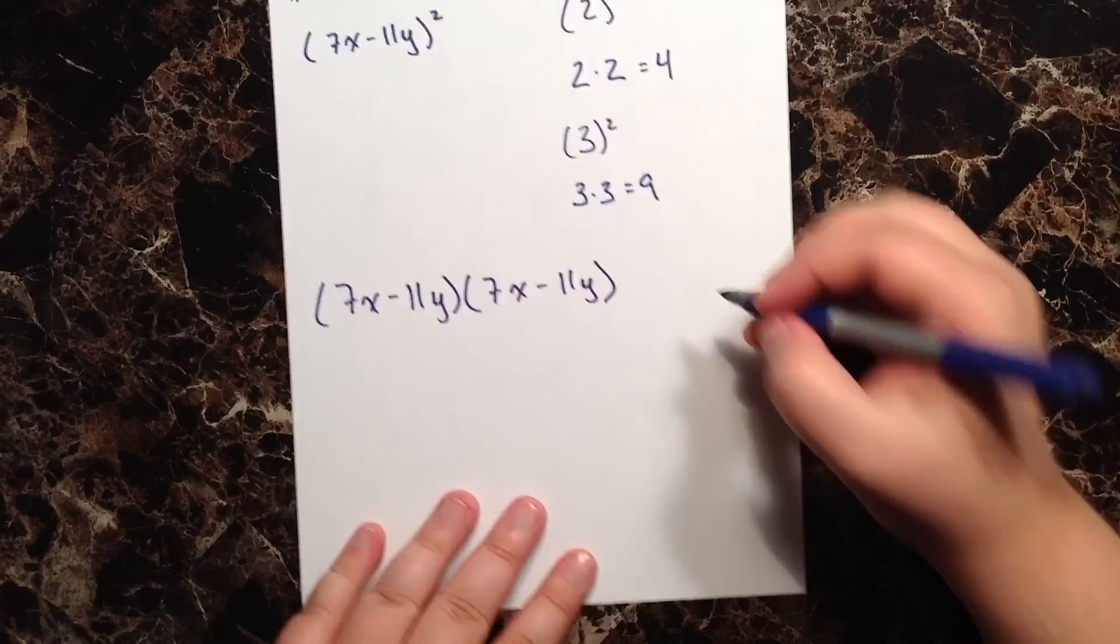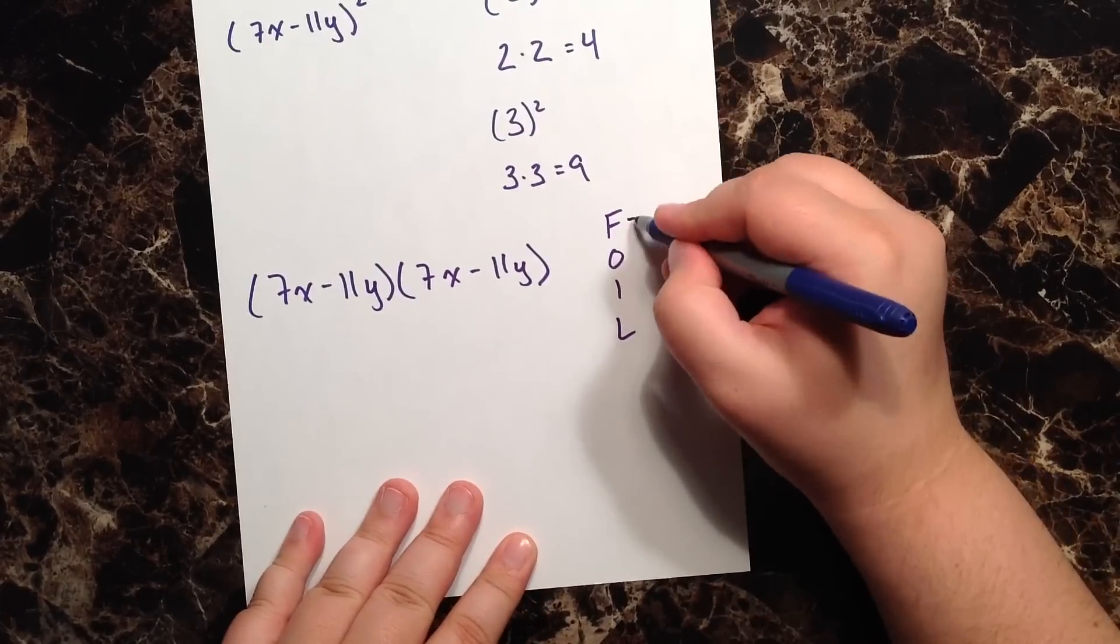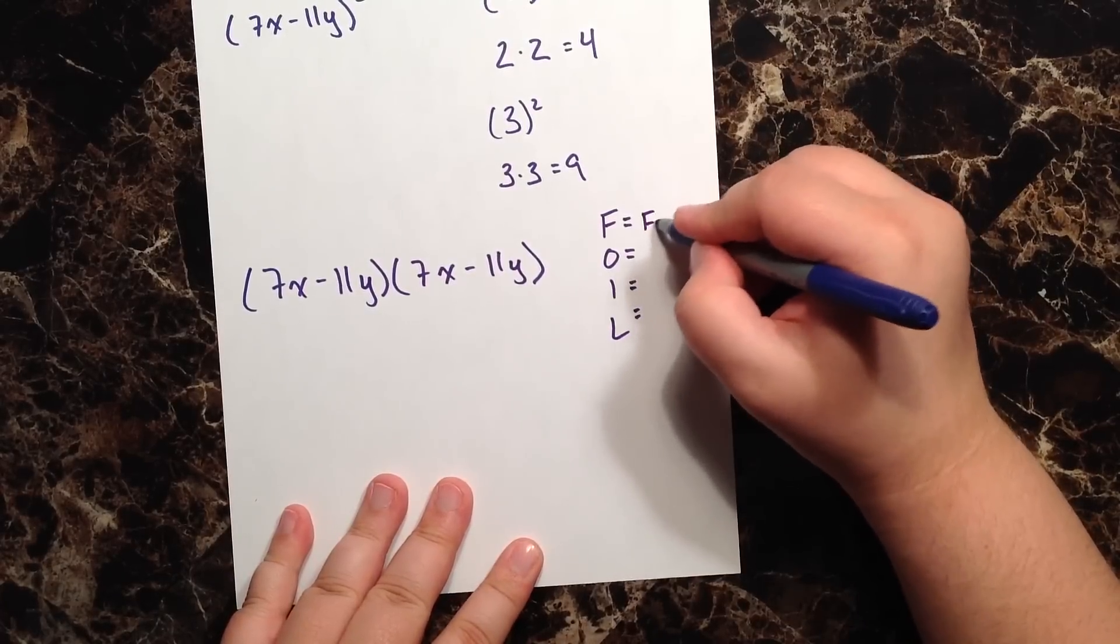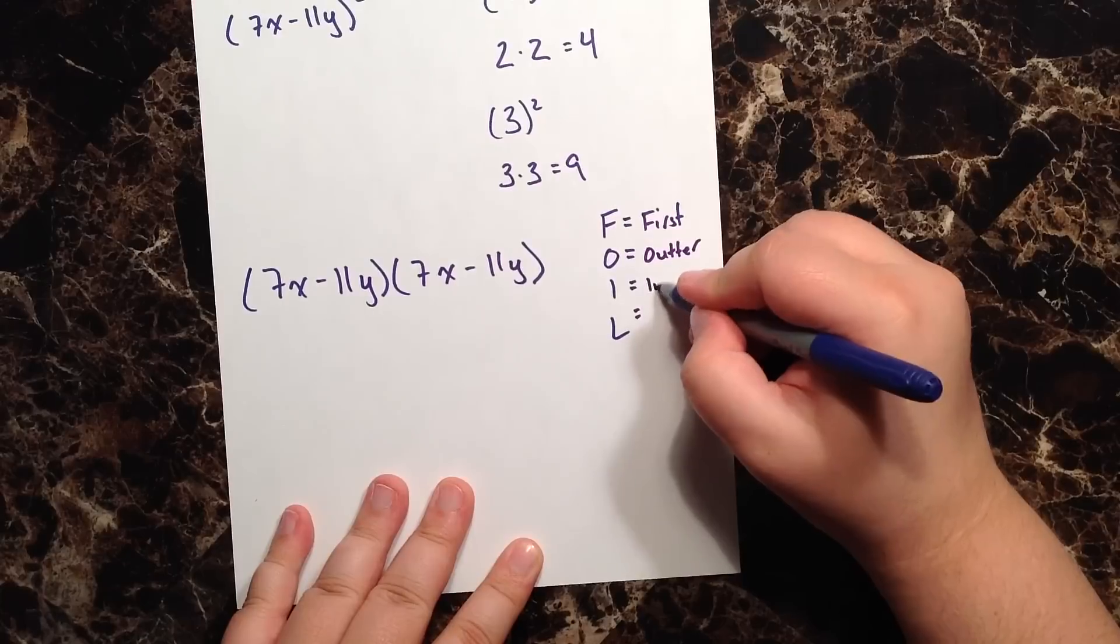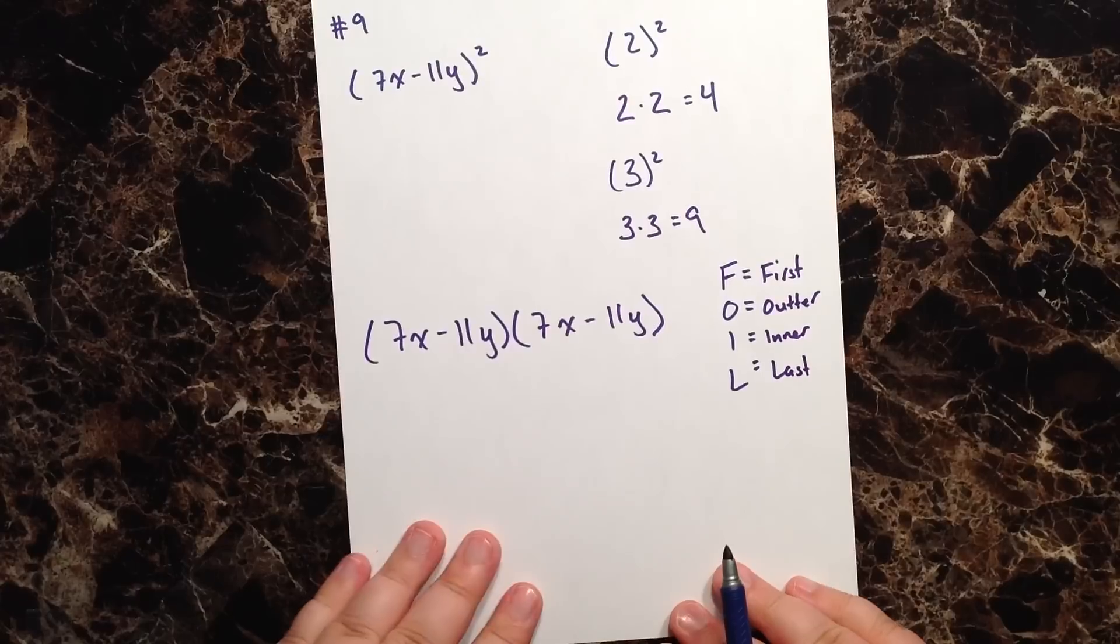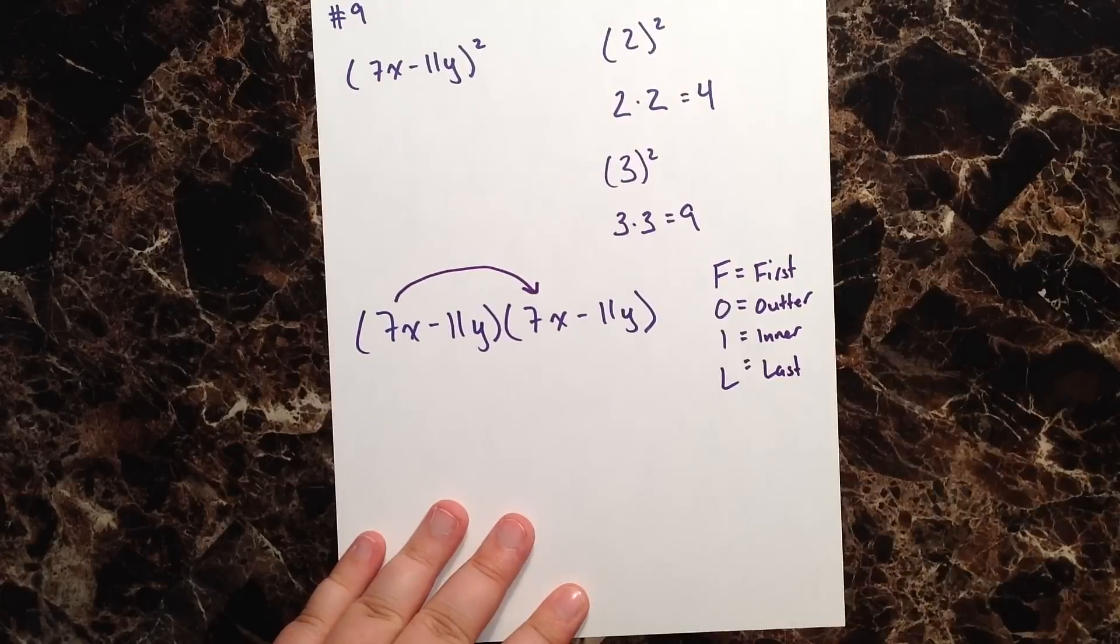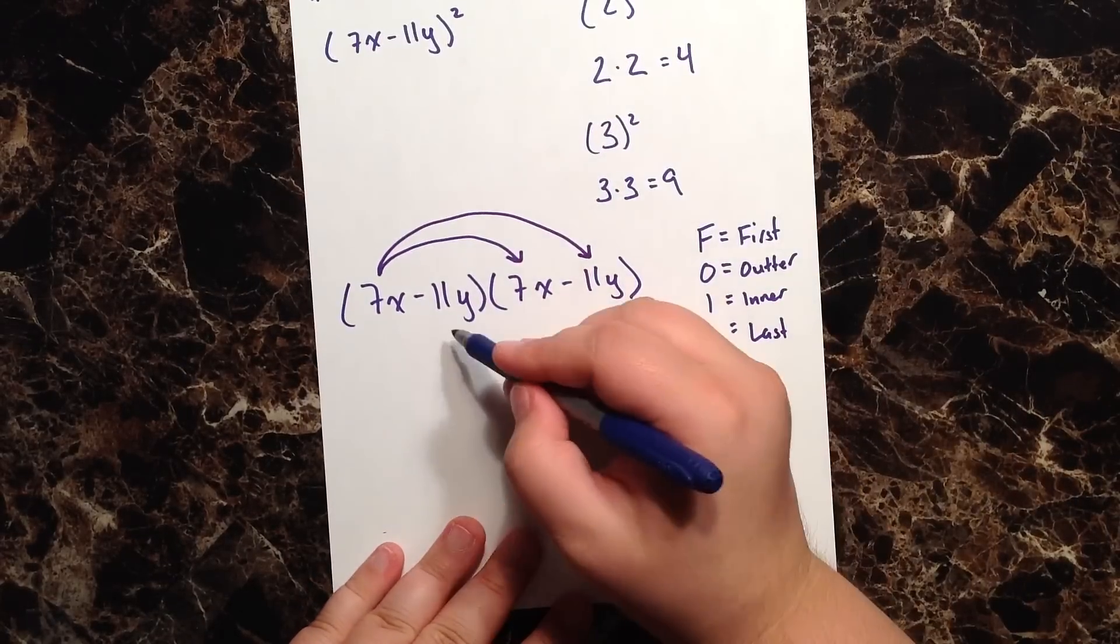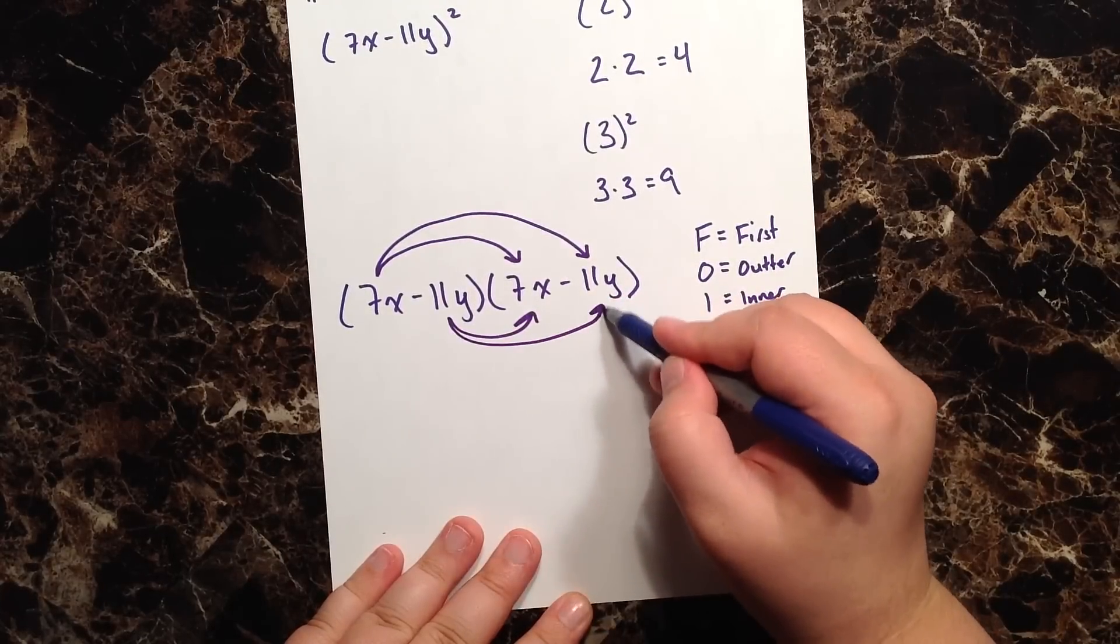When we are multiplying a binomial by a binomial, we're going to use the FOIL method. FOIL means First, Outer, Inner, and then Last. So that is our first, our outer, our inner, and then last.